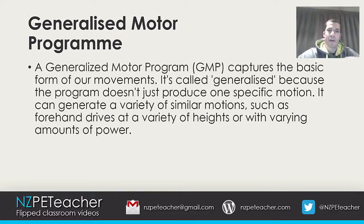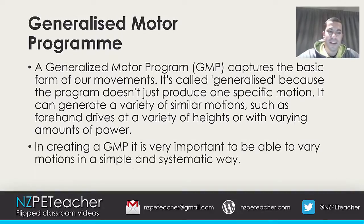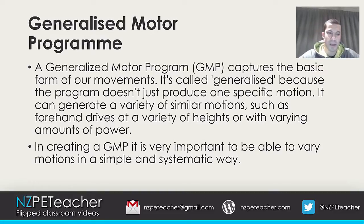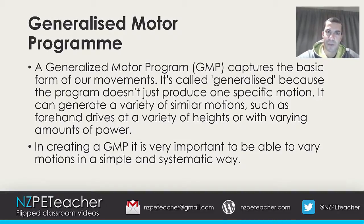Starting with the generalized motor program: the GMP captures the basic form of our movements. It's called generalized because the program doesn't just produce one specific motion — it can generate a variety of similar motions, such as a forehand drive at a variety of heights or varying amounts of power. In creating a GMP, it is very important to be able to vary motions in a simple way. If you want a swing that looks like a top player, develop a GMP that produces the same motions — get some coaching, watch videos, work on your form. The exact motion produced by a GMP is driven by parameters, such as required speed or height, which are amounts fed to the GMP by the second part of the theory: the recall schema.